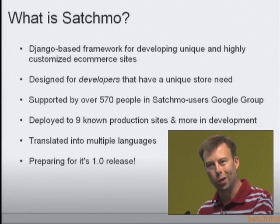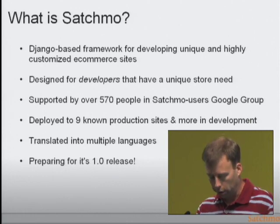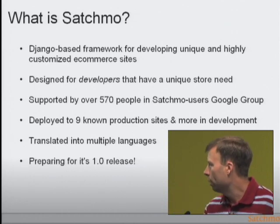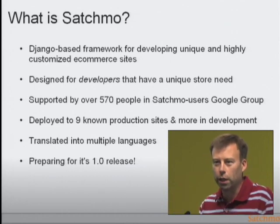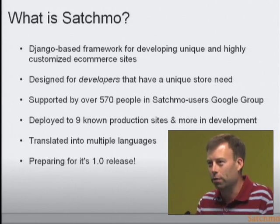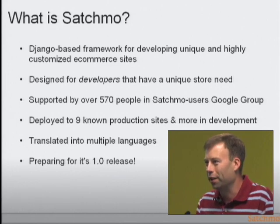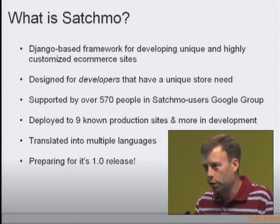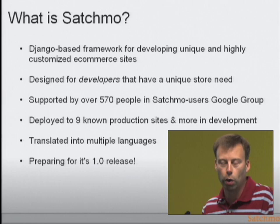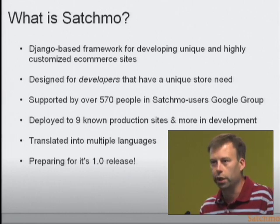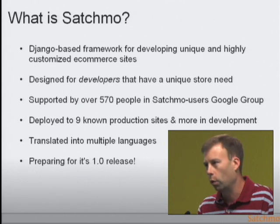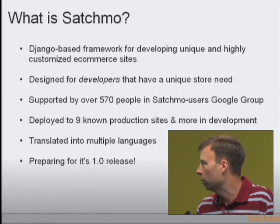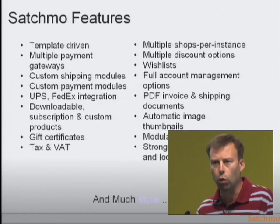Right now our Google Group has close to 600 users. There are over nine production sites — Bruce has over nine himself, so the nine featured on the Satchmo website is probably a low number. It's also translated into about a dozen languages and is preparing for its 1.0 release. We just recently made all the changes so Satchmo will run with Django 1.0, which was a lot of work the past few weeks.